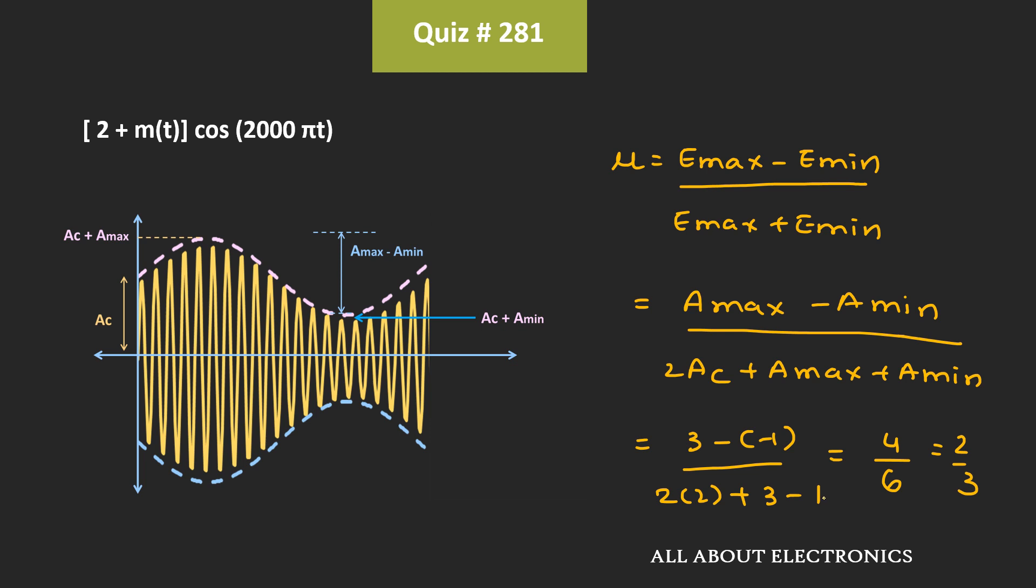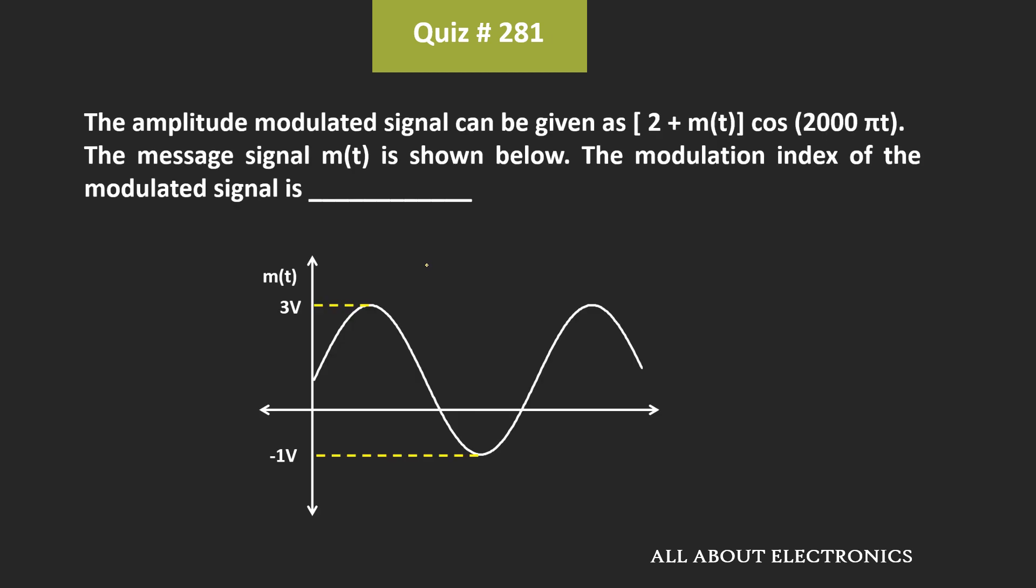That means for the given modulated signal, the modulation index μ is equal to 2 by 3. And hence, we can say that, for the given question, the answer is 2 by 3.